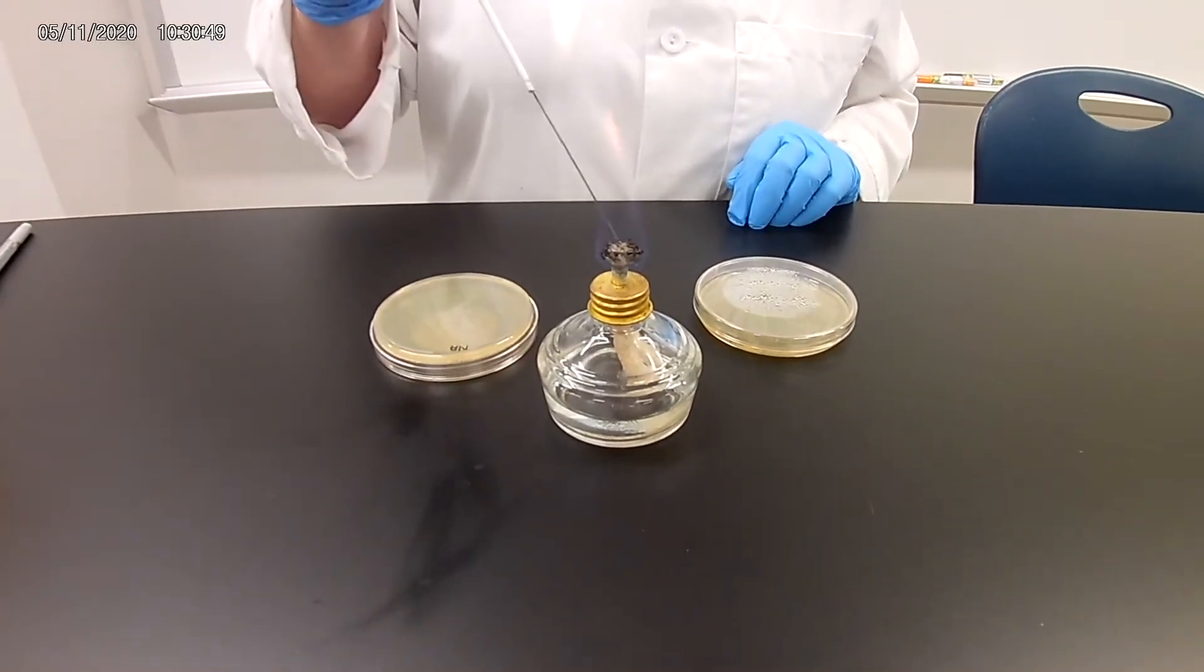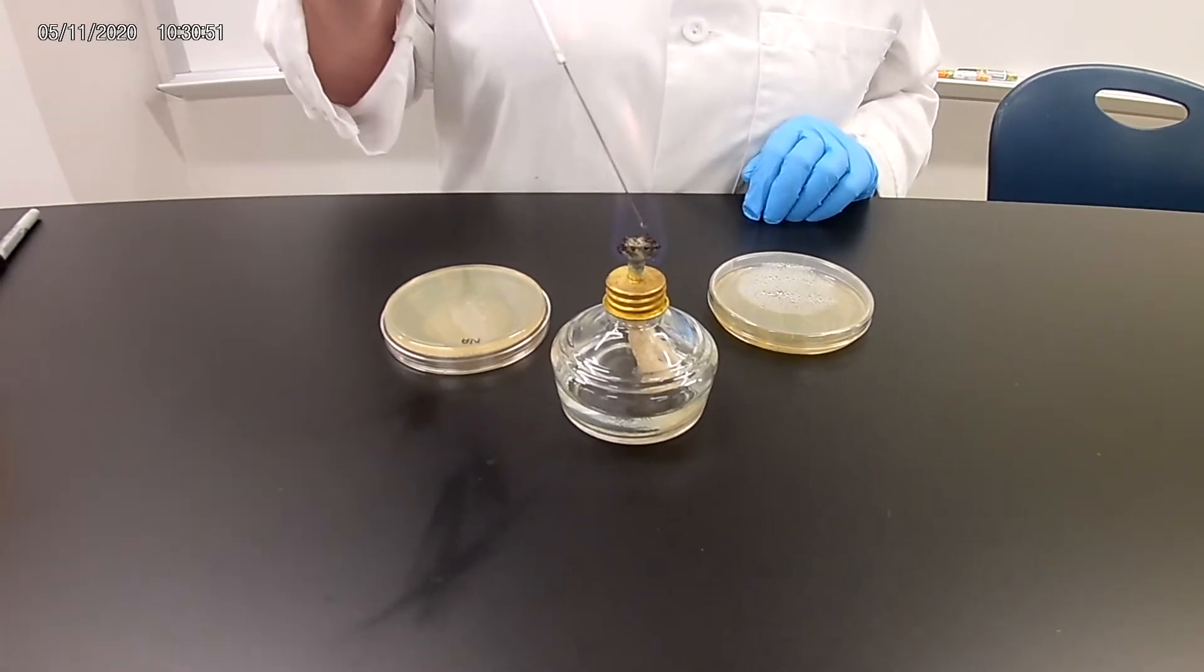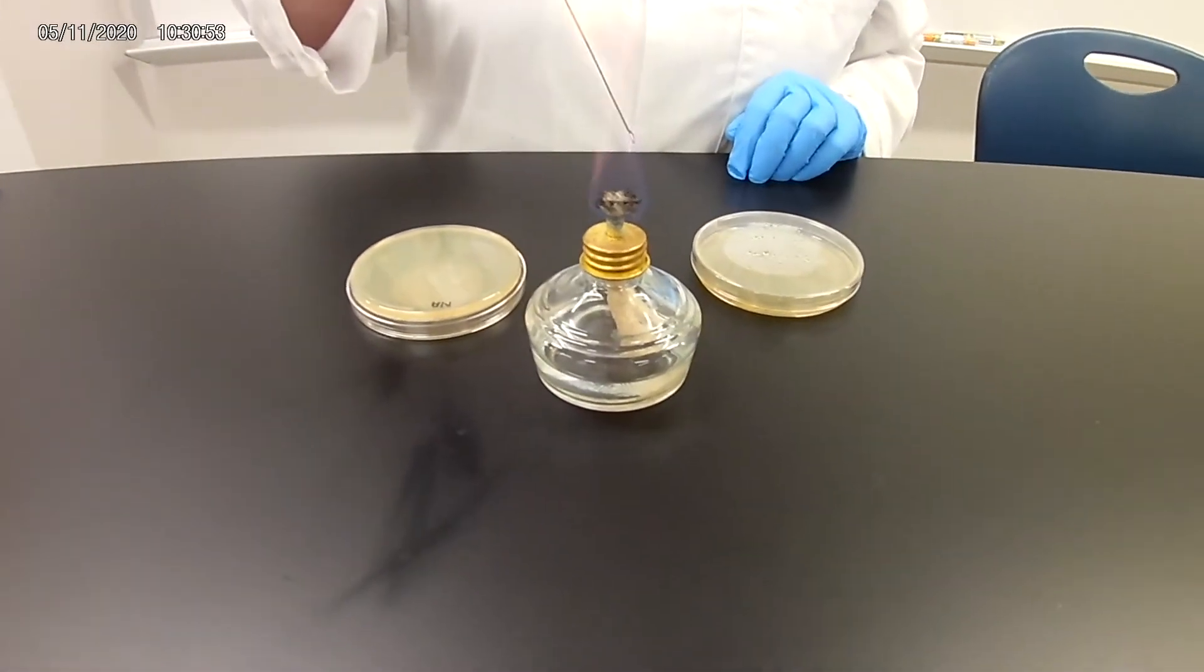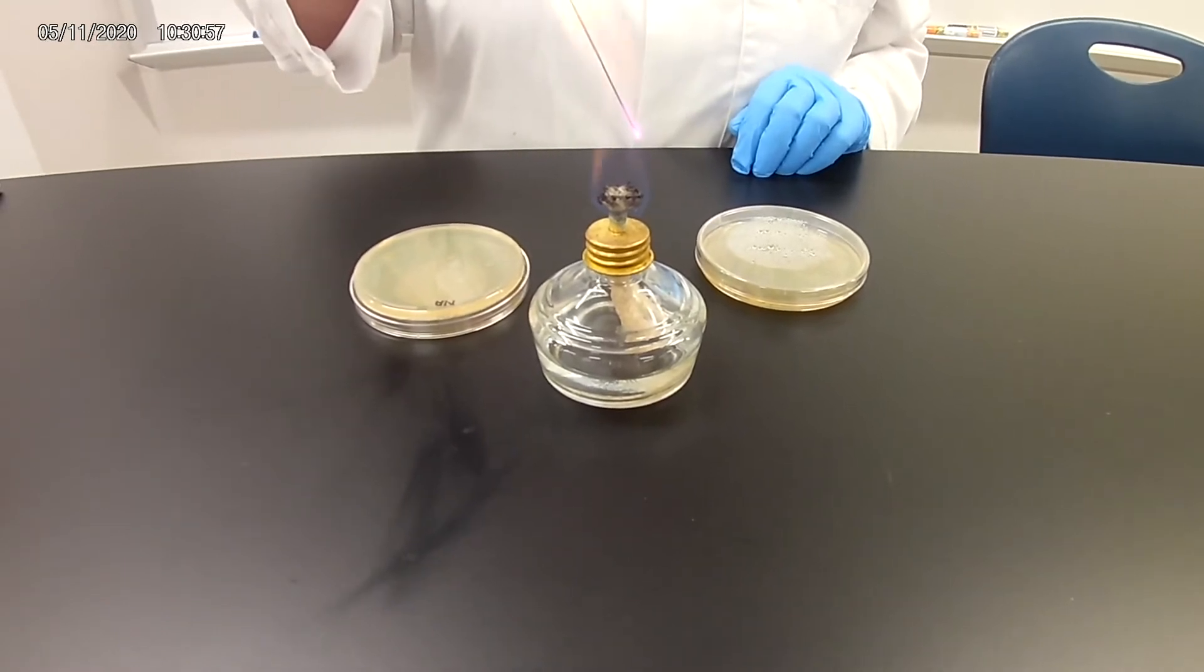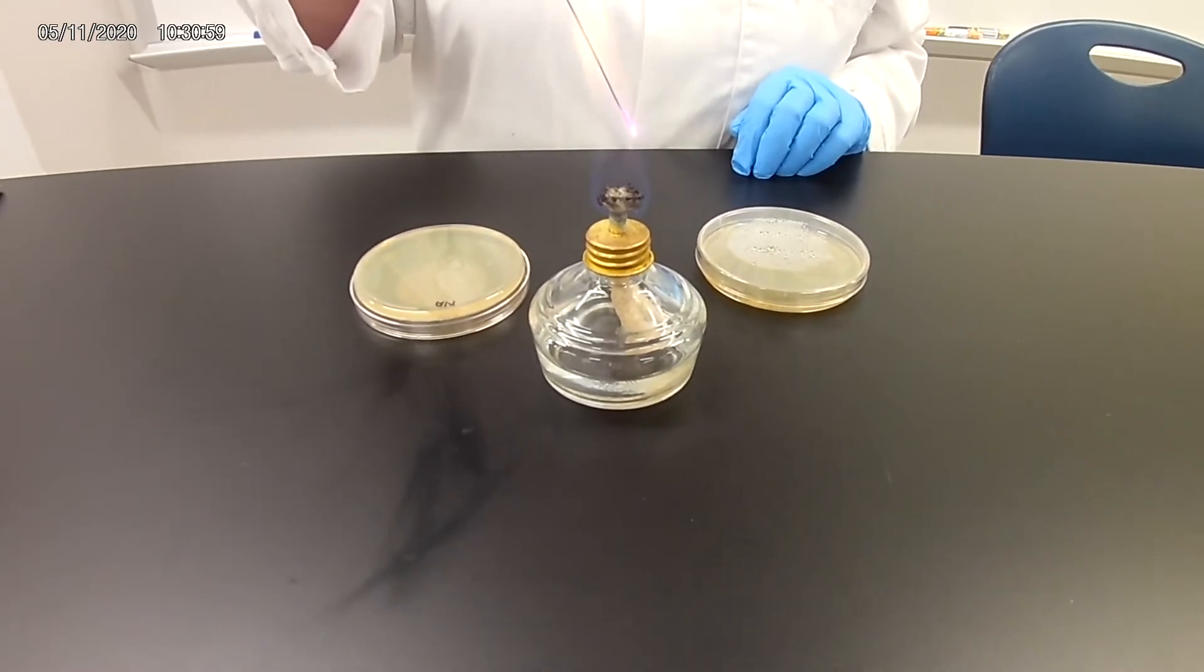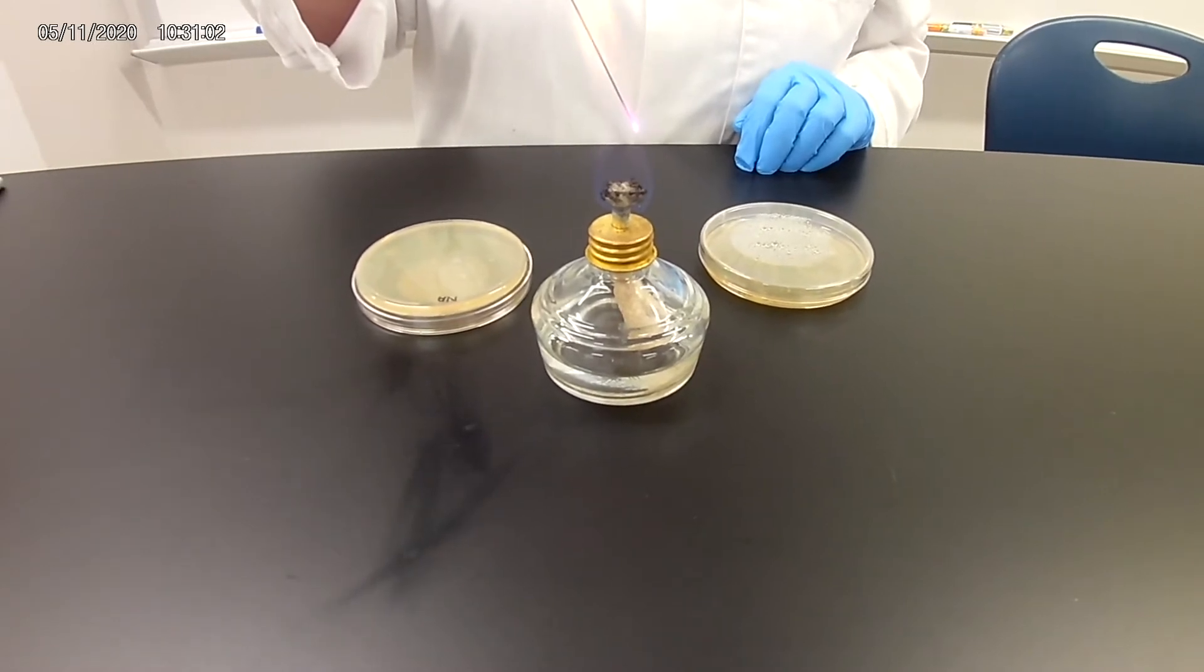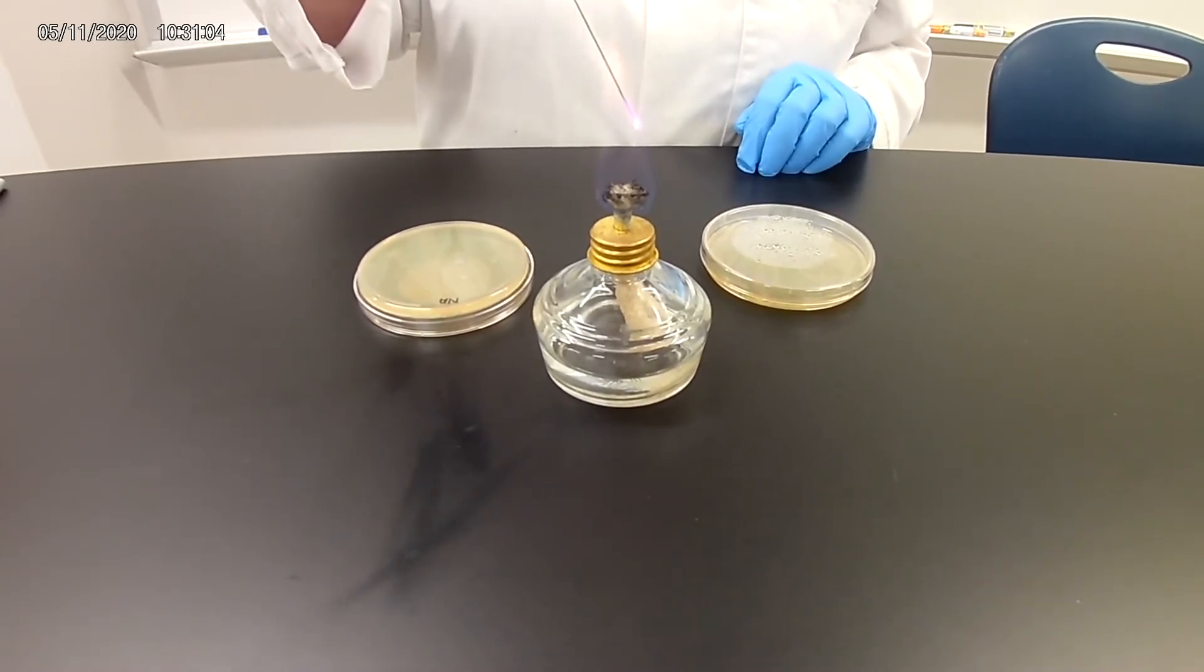Okay, today we're going to do a streak isolation. The idea behind this is we are going to inoculate a plate. We want to streak out or spread out the bacteria from the original inoculum until we have individual colonies so we have a pure culture.